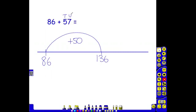They've now got their 7 left to add. When they're adding on their 7, they can bridge through the next multiple of 10. As discussed in the previous year groups, a multiple of 10 is a number that ends in 0. They want to add on 7. To get from 136 to 140, we need to add on 4.